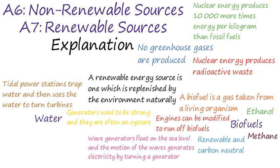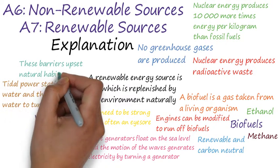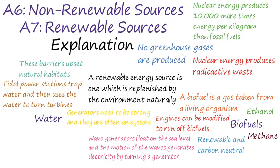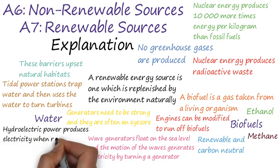Tidal power differs from wave generators because tidal power stations trap water behind a barrier. The barriers are released and as the water rushes back into the sea, they turn turbines which generate electricity. The electricity is taken to the national grid through underground cables. However, these barriers will upset natural habitats and the creatures living there, and are again an eyesore.